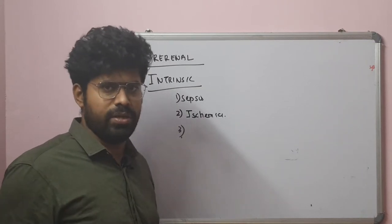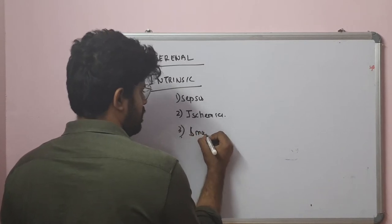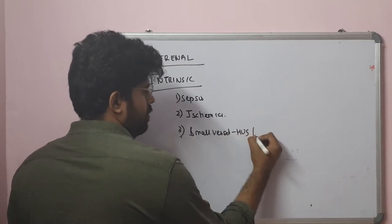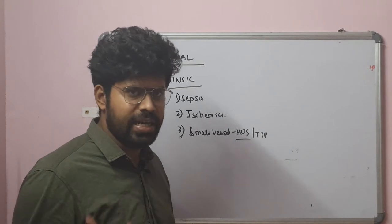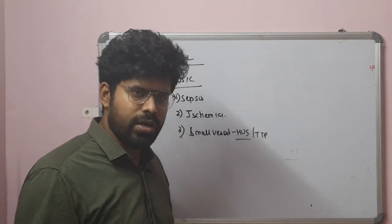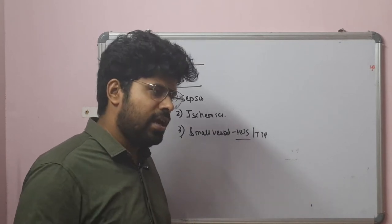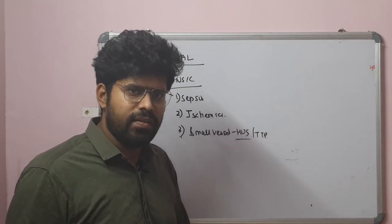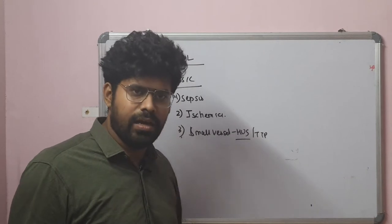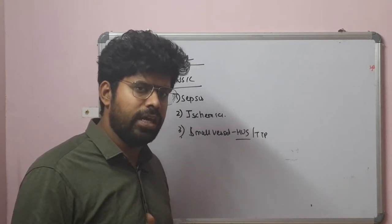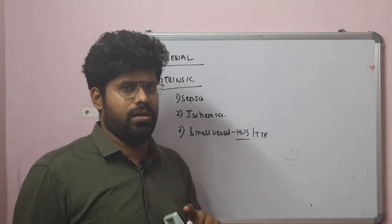Regarding HUS and TTP as small vessel causes: HUS has a classical triad of anemia, renal failure, and thrombocytopenia. There are two types — typical and atypical HUS. Typical HUS occurs secondary to gastroenteritis or pneumonia caused by E. coli or Streptococcus pneumoniae, presenting one week after infection with anemia, rising urea and creatinine, schistocytes on peripheral blood smear, and elevated LDH. Atypical HUS is due to activation of the alternate complement pathway, with mutations in factor H, factor I, and factor B. HUS should be managed by plasmapheresis; there is no role for steroids.